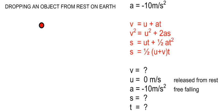When an object is released from rest, the initial velocity u is 0 meters per second, and since it is in free fall, the acceleration is minus 10 meters per second squared. The initial velocity and acceleration remain constant throughout the body's motion. However, at different times, the displacement and the velocity of the body are different.